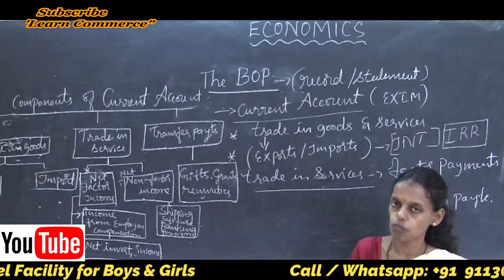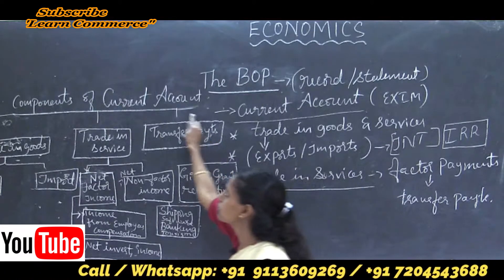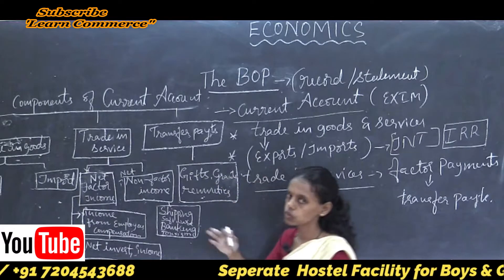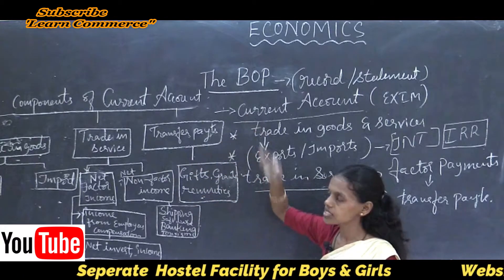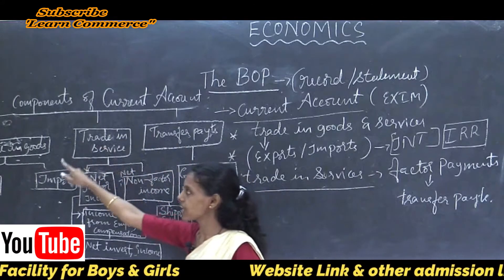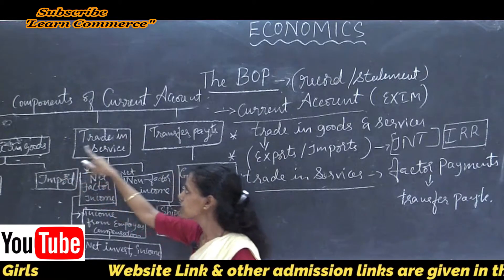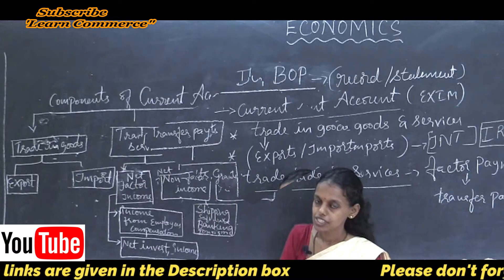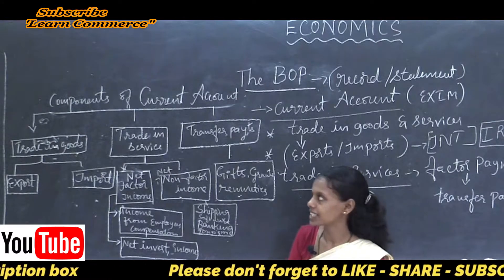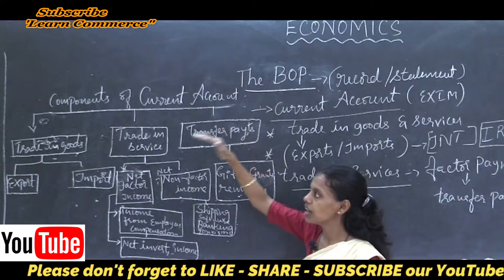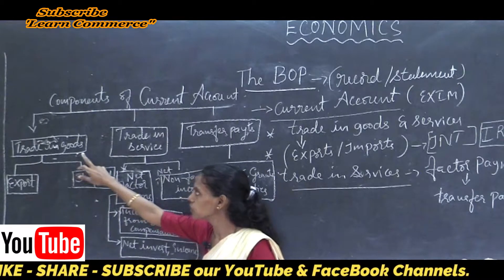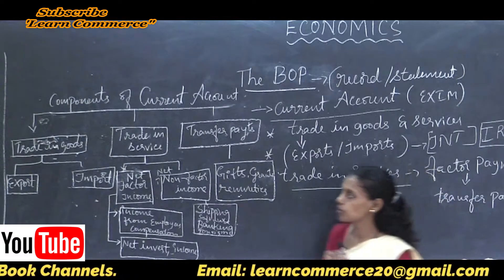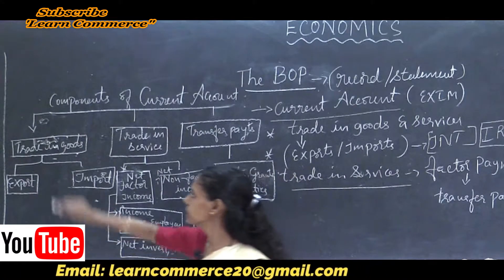What are the components of current account? Current account is a record of trading goods and services. The components are: first, trade in goods; second, trade in service; and third, transfer payments. So current account is an annual record or statement of trade in goods, trade in service, and transfer payments.